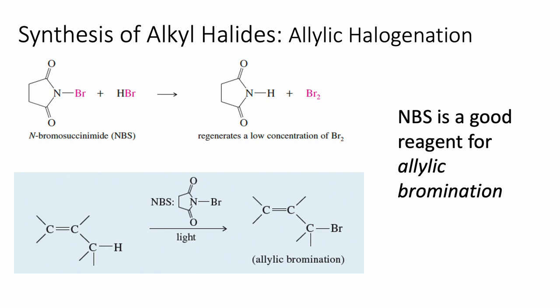NBS is a good reagent because when NBS reacts with HBr, it actually creates a little bit of Br2. That means we can add NBS to a reaction without having too much Br2 present — it just regenerates a low concentration of Br2. The takeaway point is that NBS is a good reagent for allylic bromination. When we have an allylic position, we can use Br2 or NBS, but NBS is usually a better choice because it prevents the double bond from reacting.